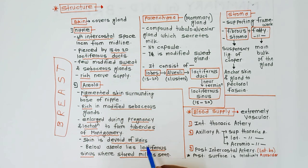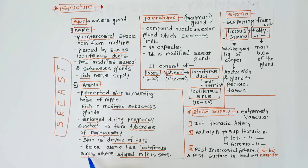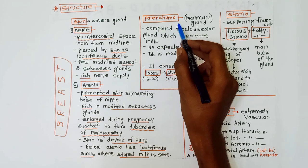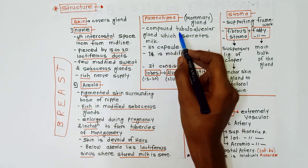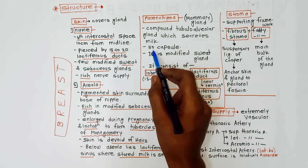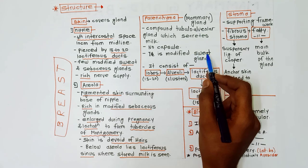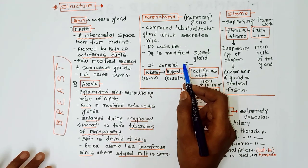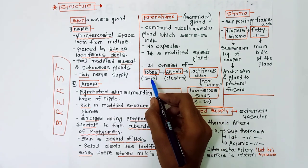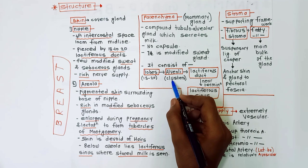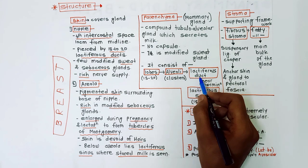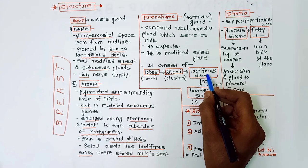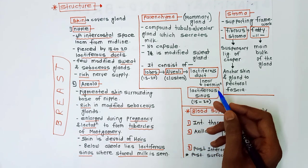Below the areola lies the lactiferous sinus, where stored milk is found. Next is parenchyma, also called the mammary gland — it is a compound tubulo-alveolar gland that secretes milk. It has no capsule and is a modified sweat gland. Each breast consists of 15 to 20 lobes; each lobe consists of clusters of alveoli, each alveolus has its own lactiferous duct, and at the termination of the lactiferous duct there is a lactiferous sinus where milk is stored.